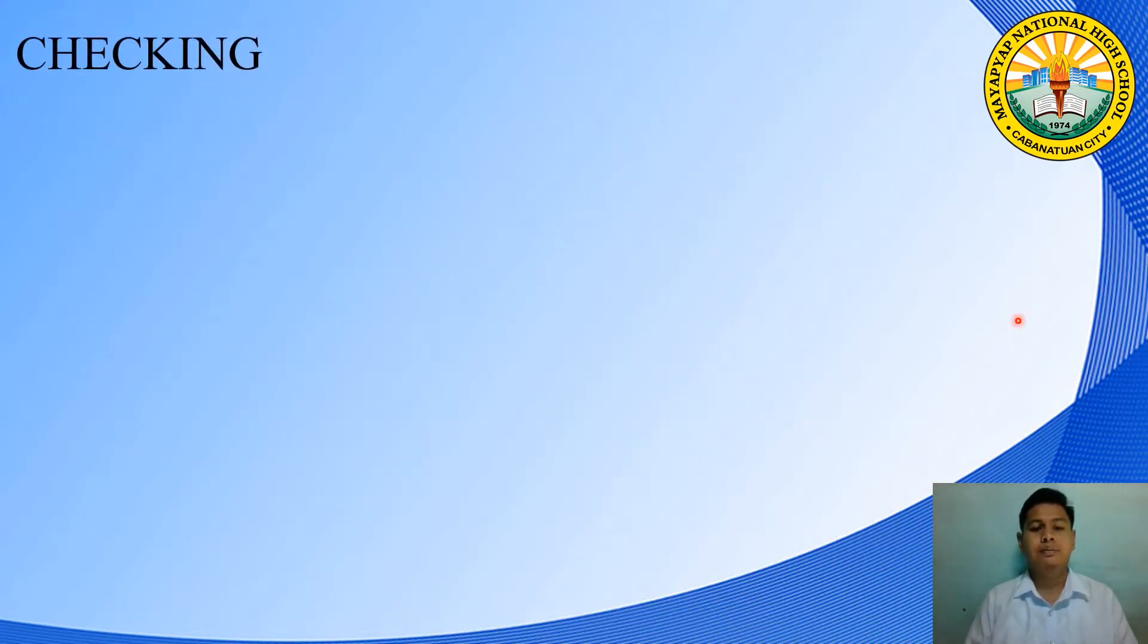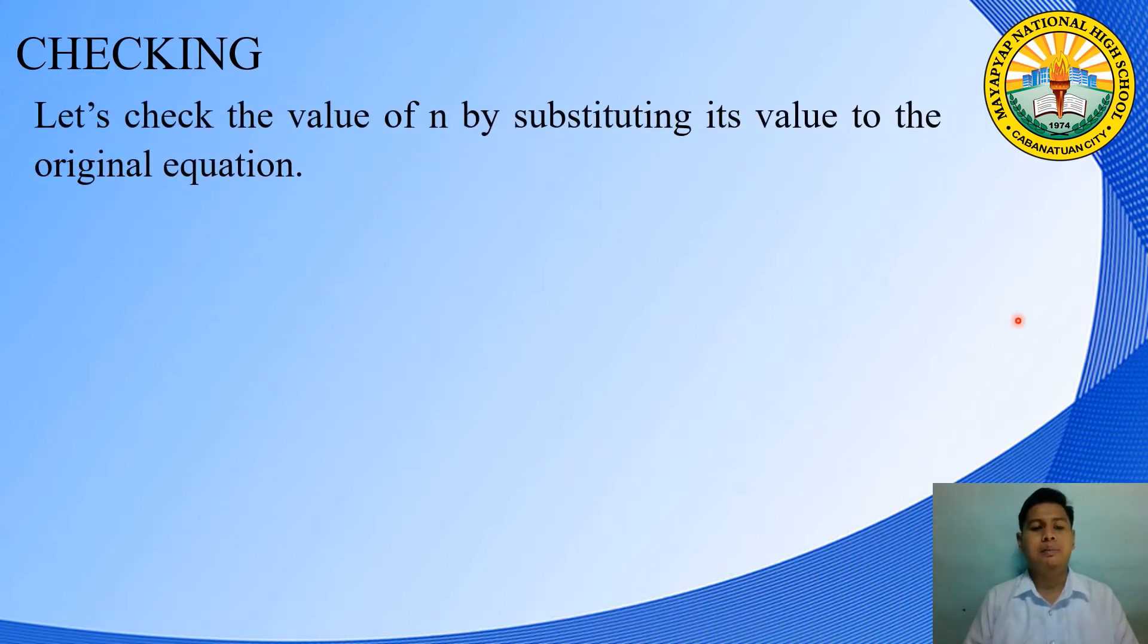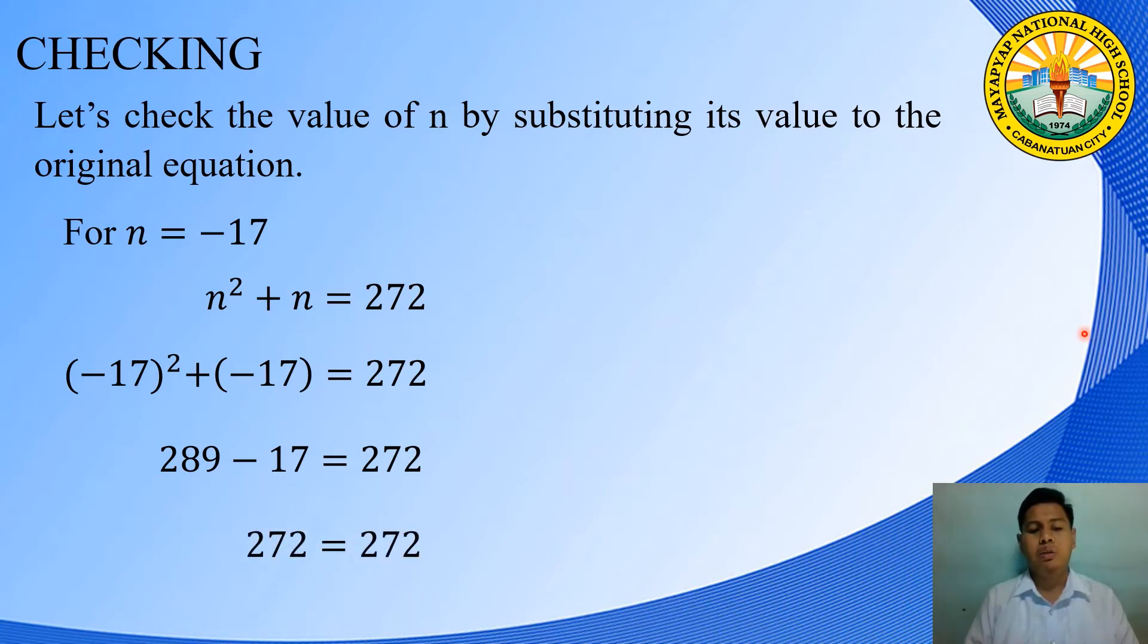Checking. Let's check the value of n by substituting its value to the original equation. For n = -17, replacing n in the equation n² + n = 272, it will lead to (-17)² + (-17) = 272. Performing the operation, (-17)² = 289 plus negative 17 that will become -17 equals 272. Subtracting 17 from 289 leads to 272 = 272. Meaning, negative 17 is a value of n.